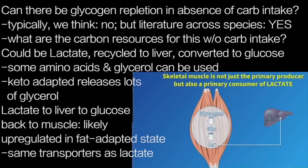So this is showing that glycogen, if it's being broken down into glucose and converted to lactate within skeletal muscle, that lactate could be released and delivered to the liver, converted to glucose, and then that glucose could be used as a substrate to form glycogen. It's likely that this process is upregulated in the keto-adapted state.